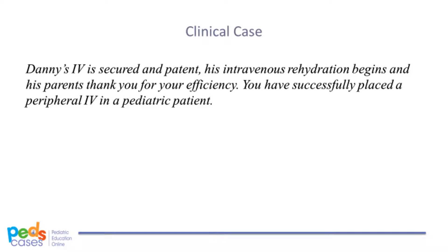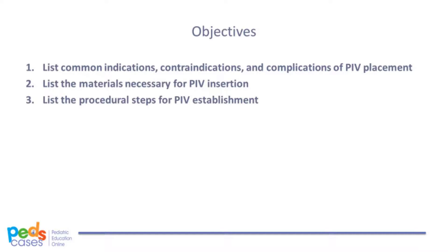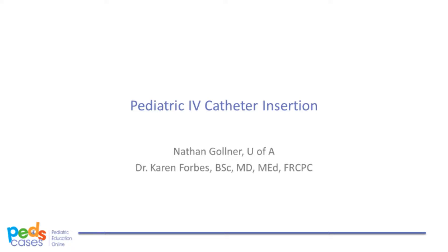Let's revisit our case and our objectives. Danny's IV is secured and patent. His intravenous rehydration begins, and his parents thank you for your efficiency. You have successfully placed a peripheral IV in a pediatric patient. In this session, we discussed common indications, contraindications, and complications of peripheral IV placement. We listed the materials necessary for peripheral IV insertion, and we listed the procedural steps of peripheral IV establishment. This concludes the second of our two-part series intended to introduce the listener to peripheral IV insertion in the pediatric patient. Thanks for listening, and good luck.